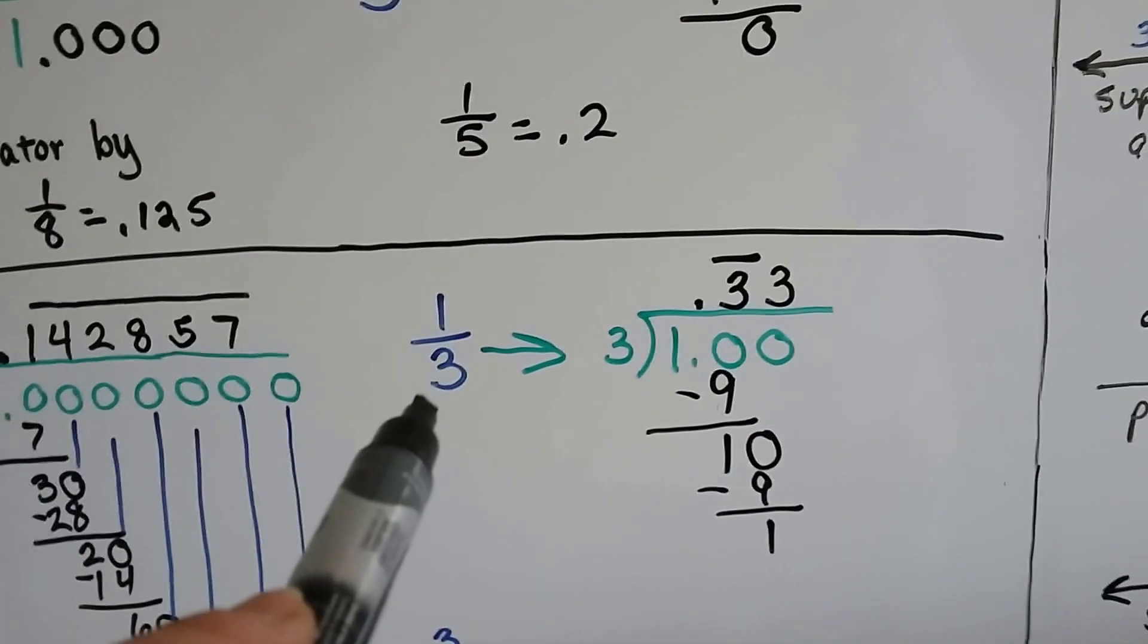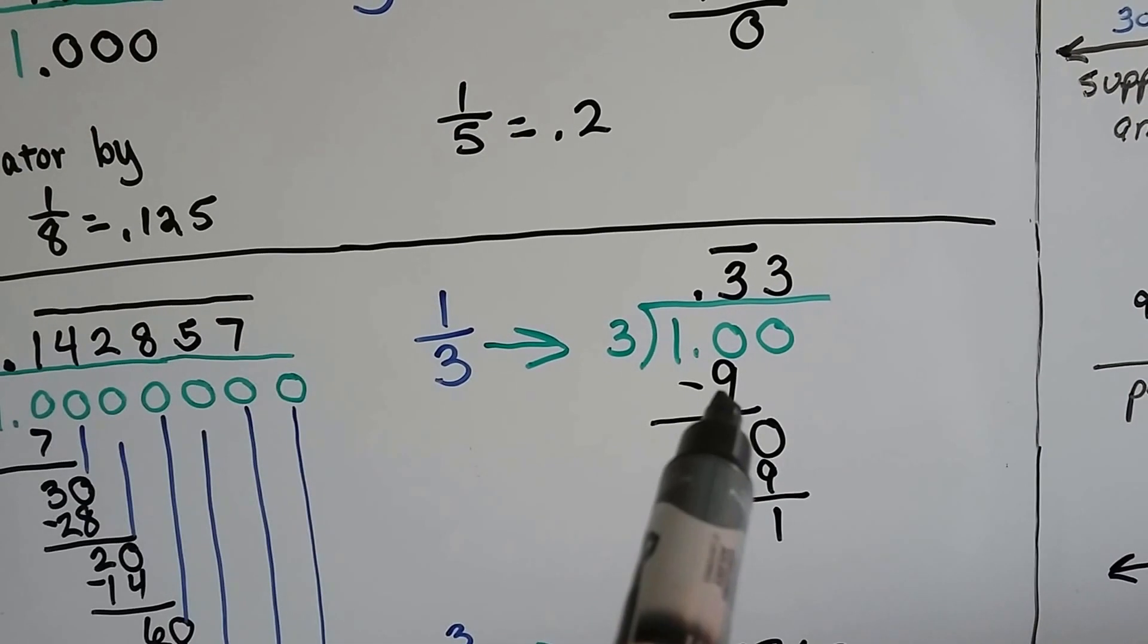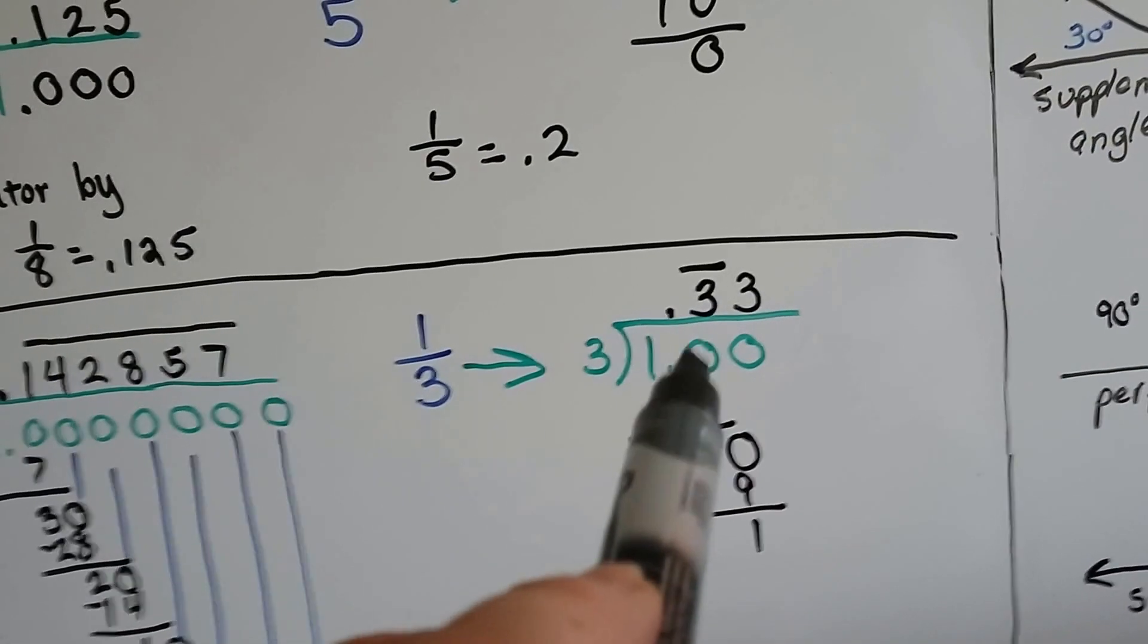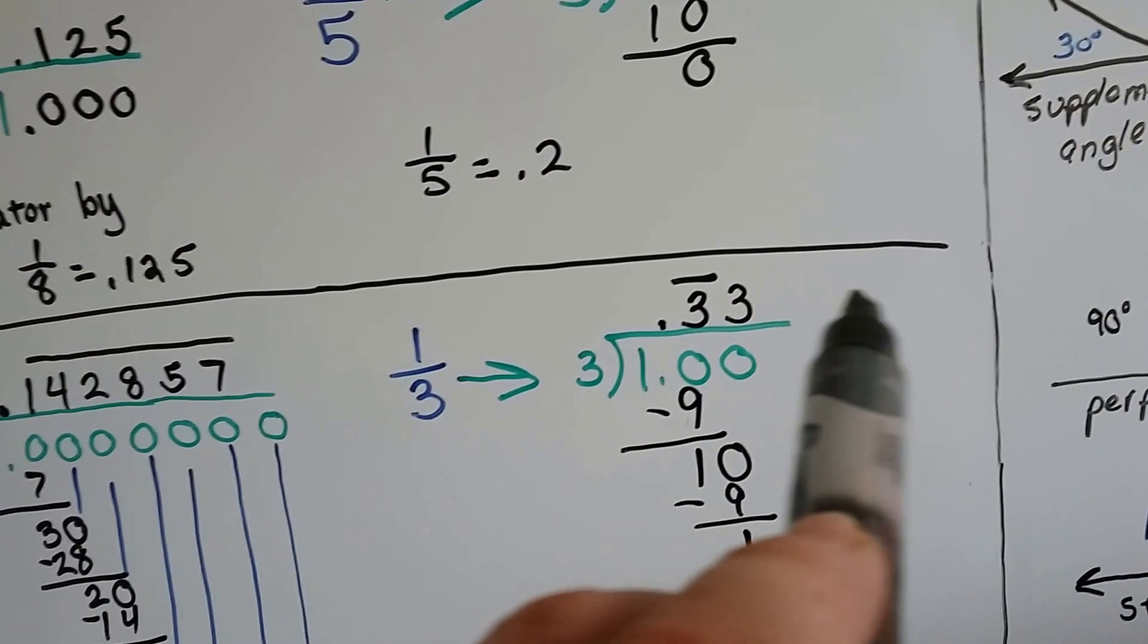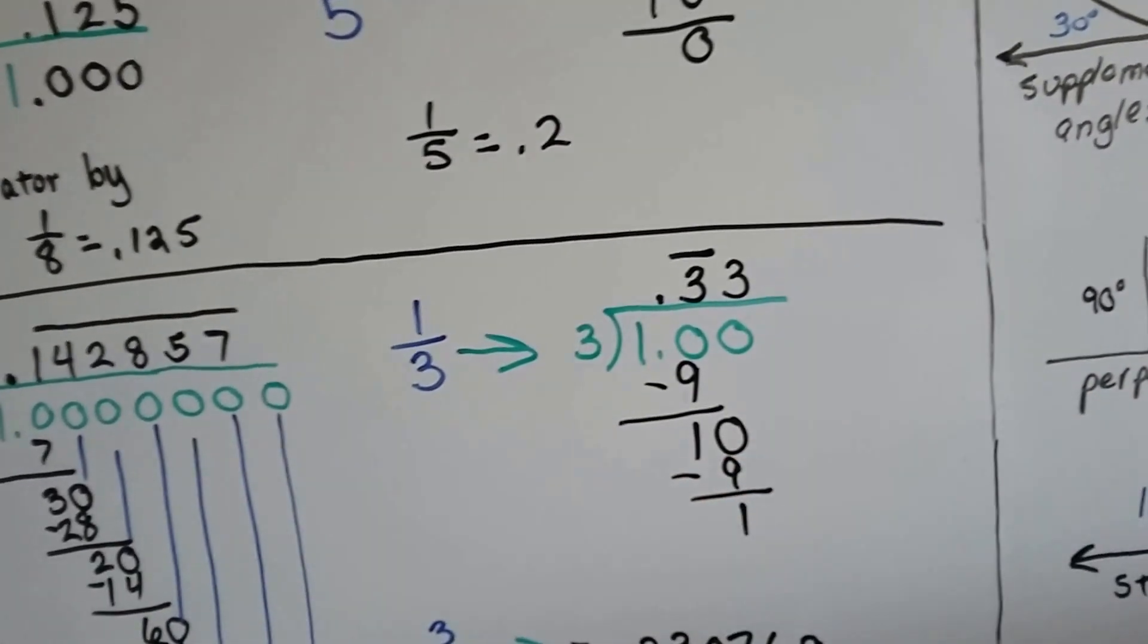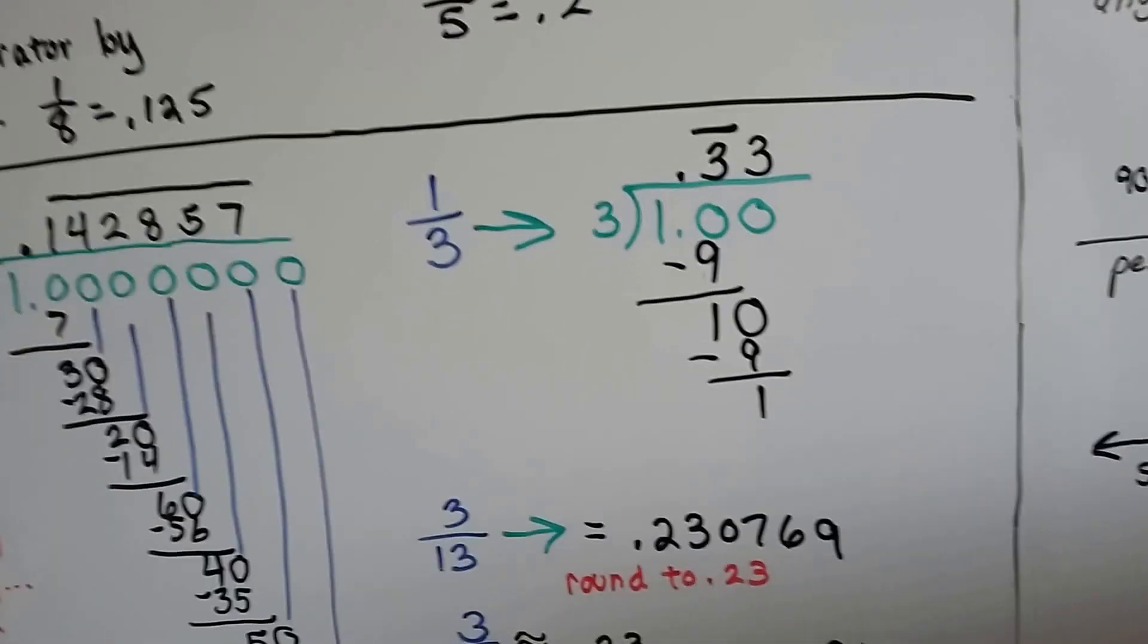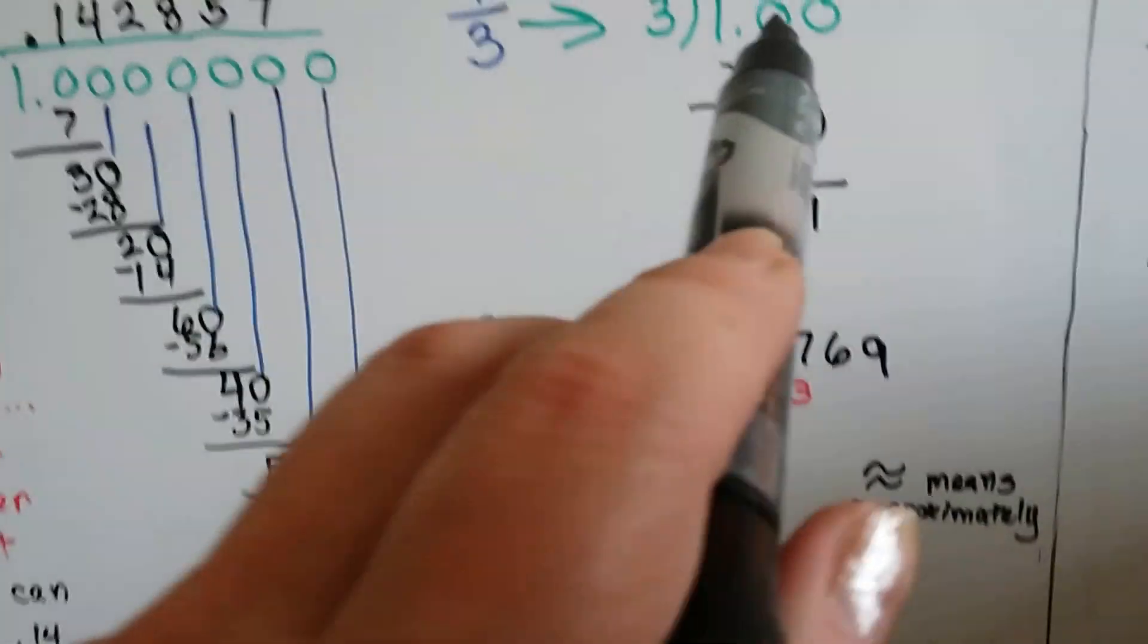When we do one-third, we try to put three into one-point-zero. It goes in three times, and three times three is nine, and then we get a one-zero again, and it's going to keep being point-three-three-three. So, one-hundred cannot be split into thirds evenly, because we get a repeated decimal going into three-three-three-three-three, constantly going back. So, all we have to do is put the bar for the repeating decimal over the number that repeats, and just stop there. Two-thirds will do the same thing as point-six-six-six-six-six. Because it's just double this. So, it's double the three.